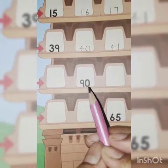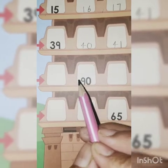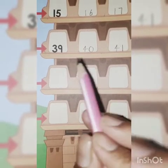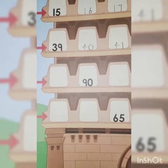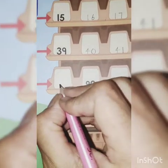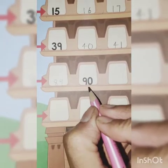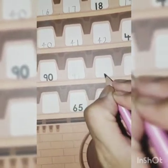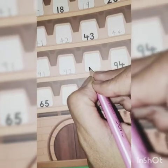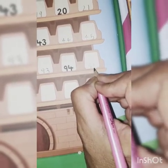Next row: 90. One box is blank. What comes before 90? 89. Then: 89, 90, 91, 92, 93, 94. Then 95 — very good. Fourth row complete.